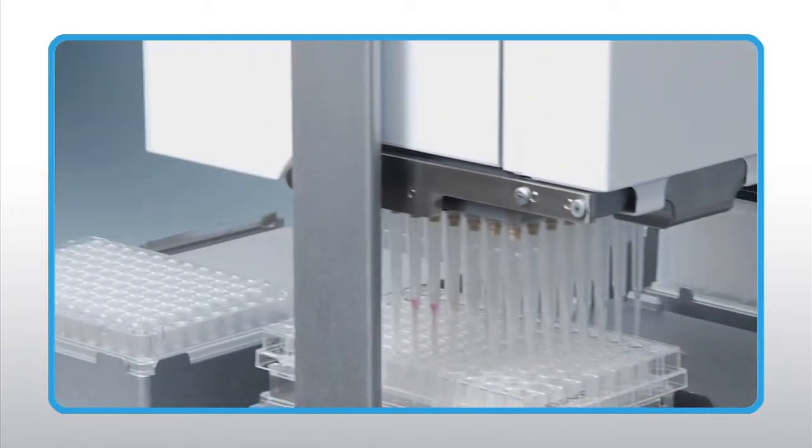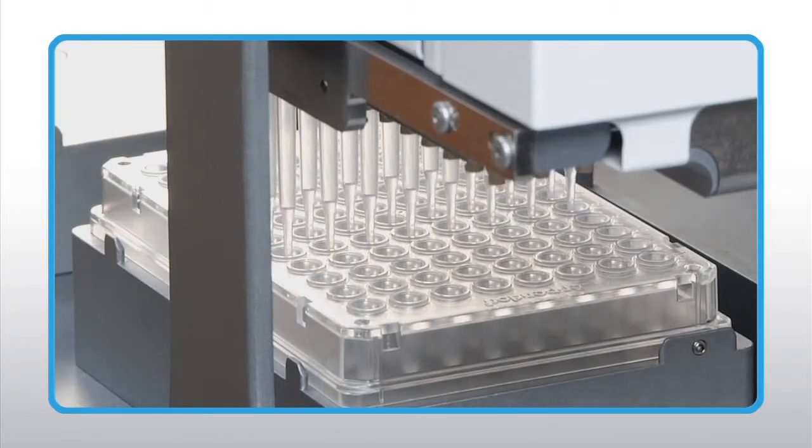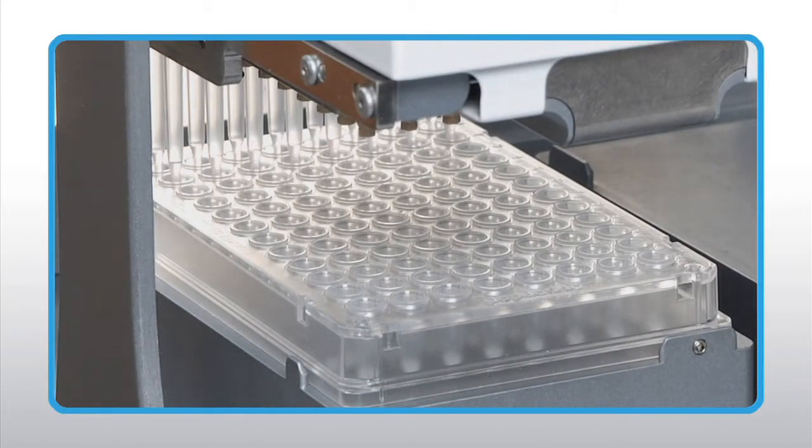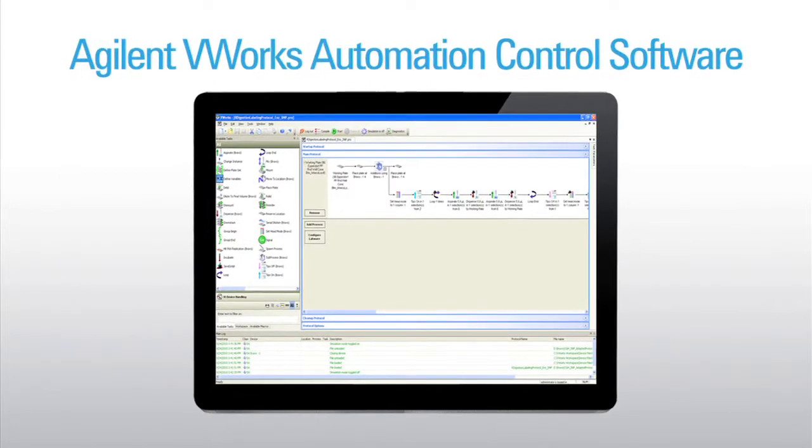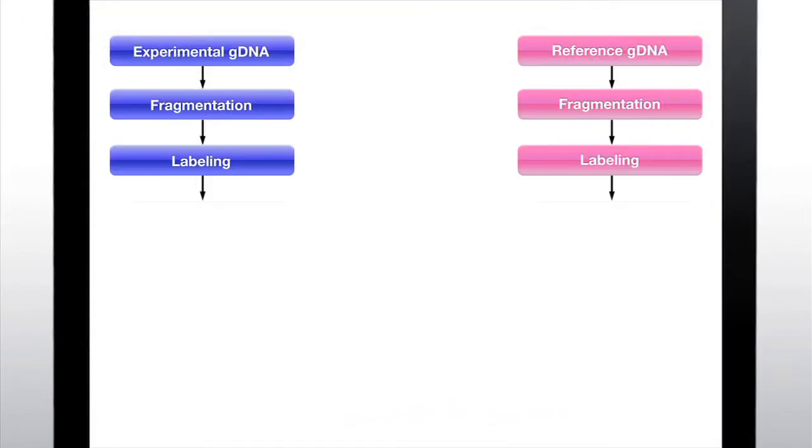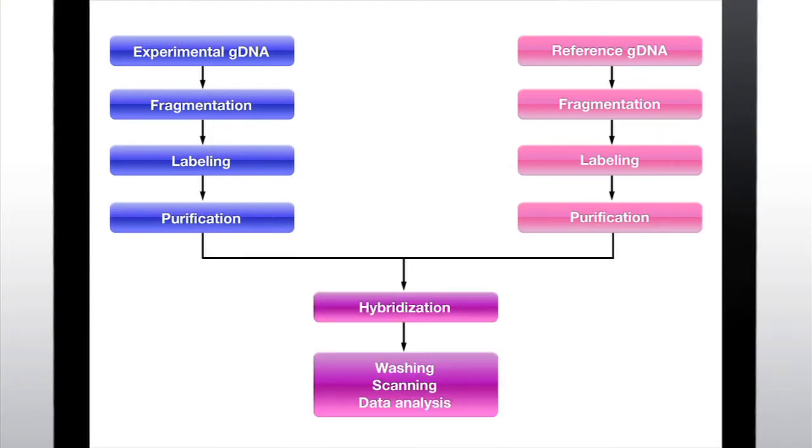A new method was developed to automate the CGH sample preparation in a 96-well format by using the Agilent Bravo automated liquid handling platform. The V-Works automation control software provides protocols for the fragmentation, labeling, purification, and pre-hybridization setup.